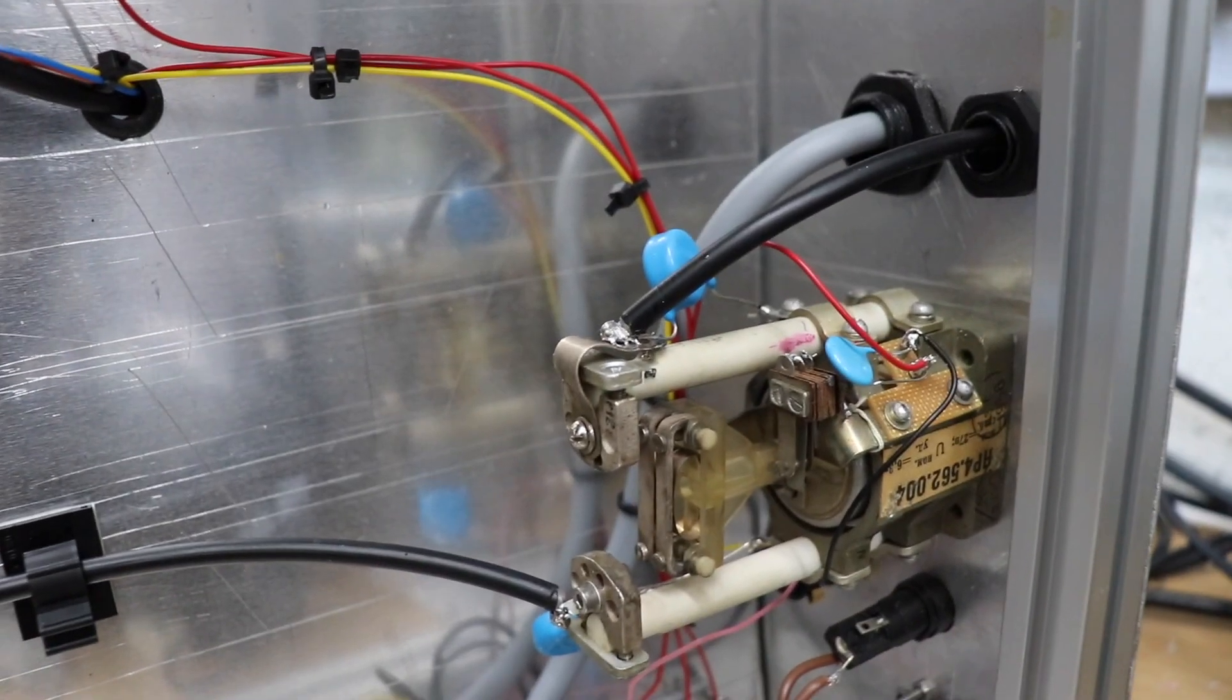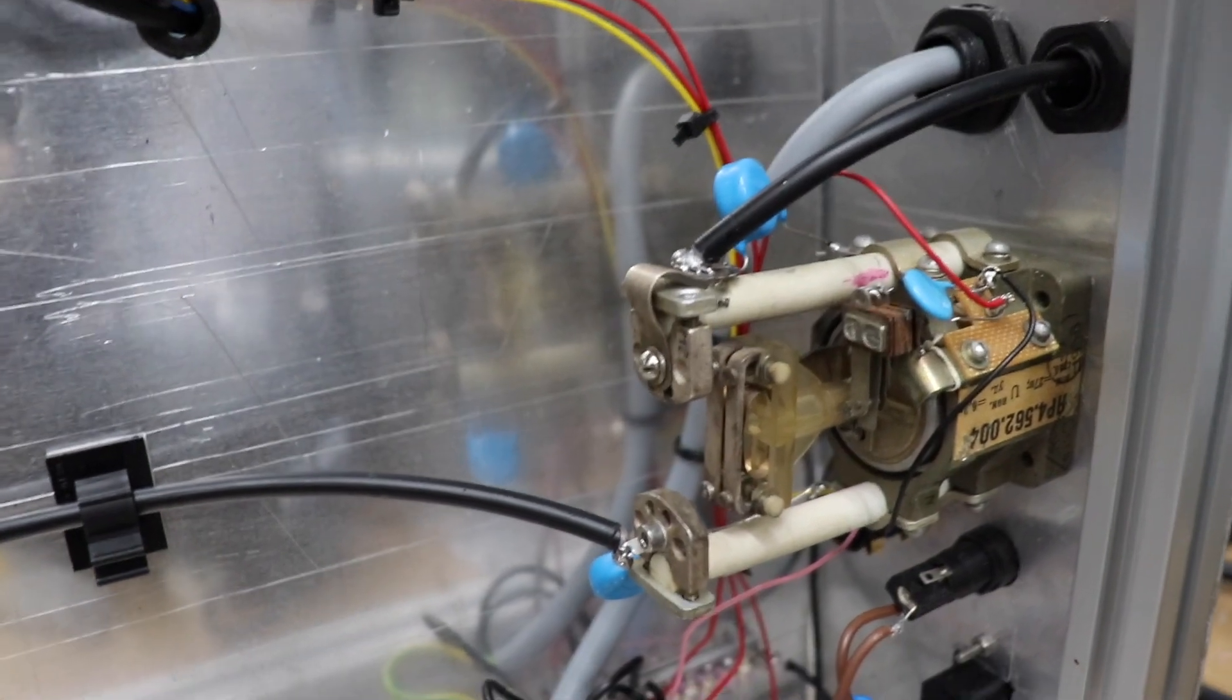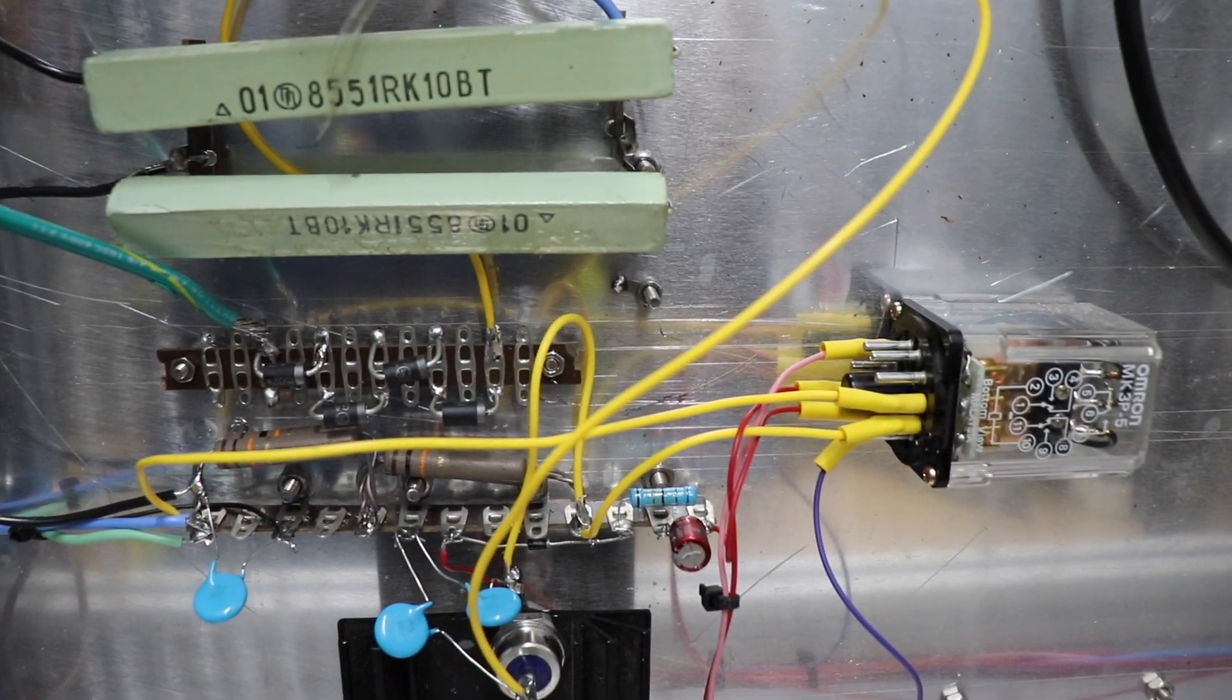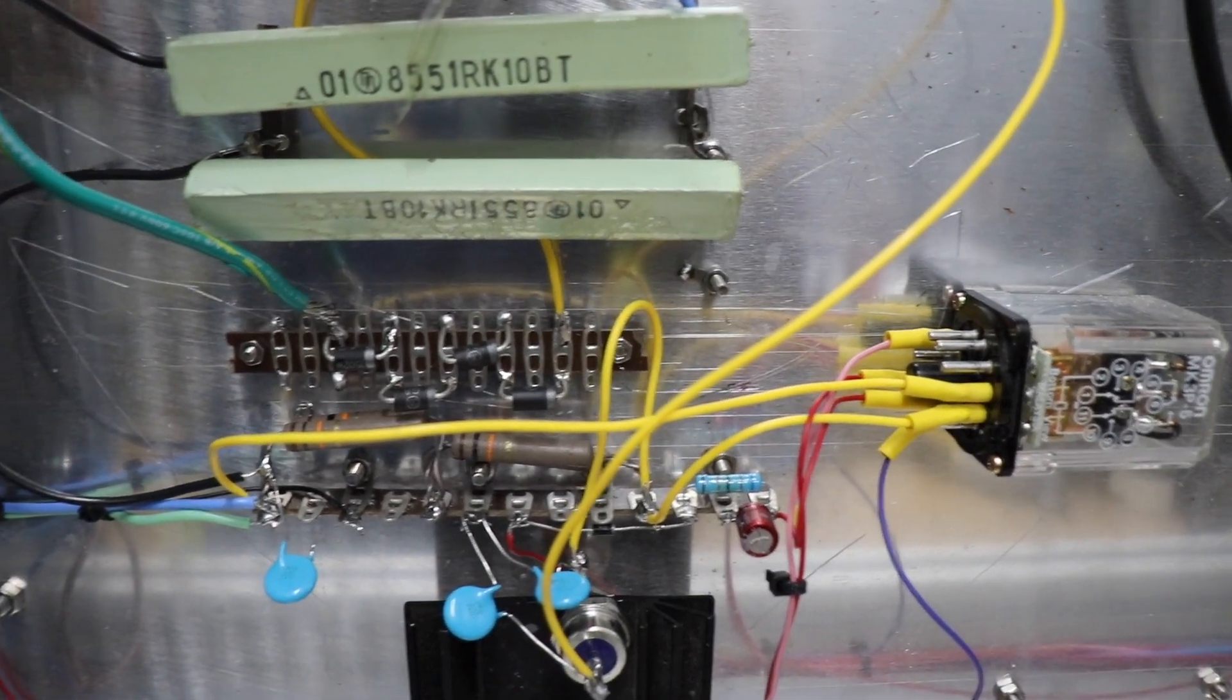There's a lovely high voltage relay there which basically turns the HT on, and down here you can see that's all the biasing arrangement.